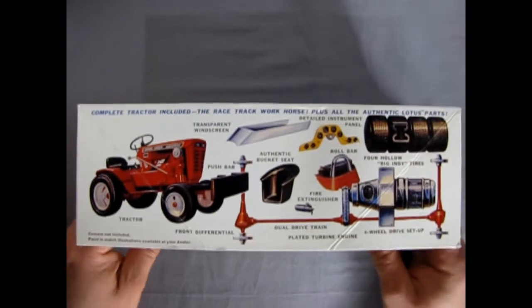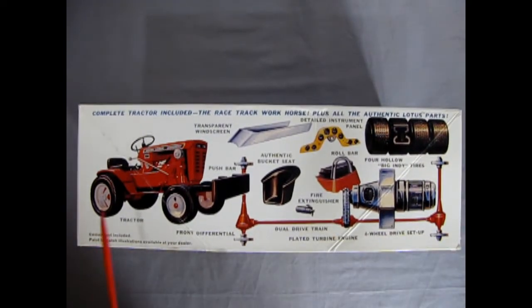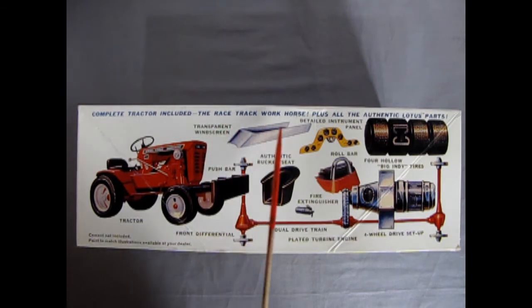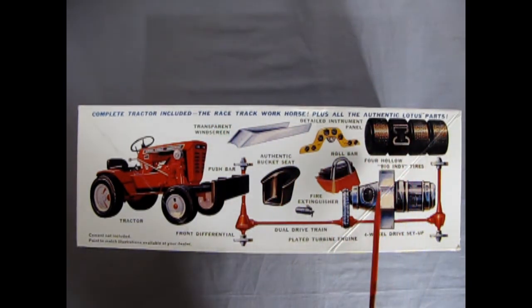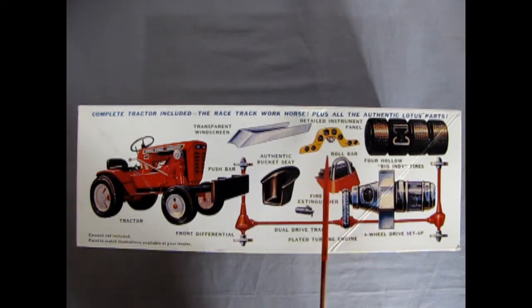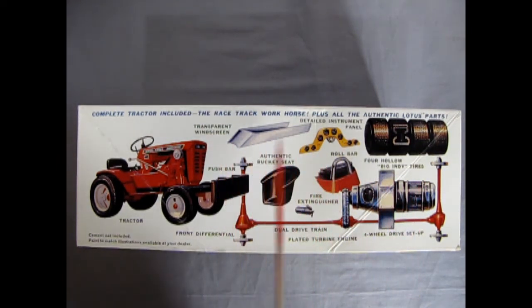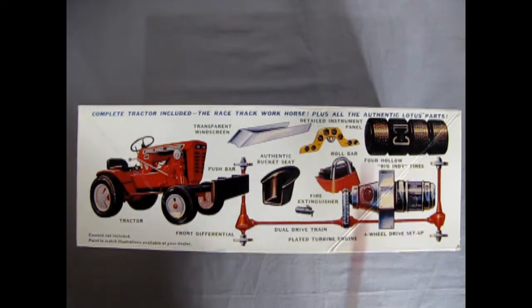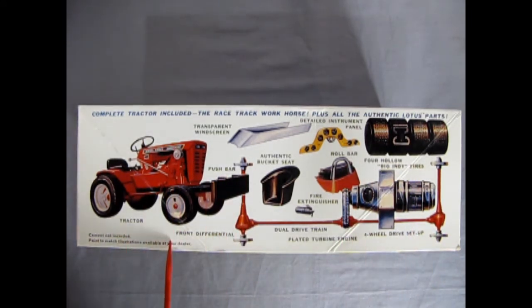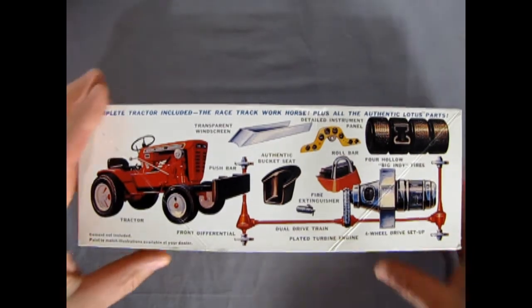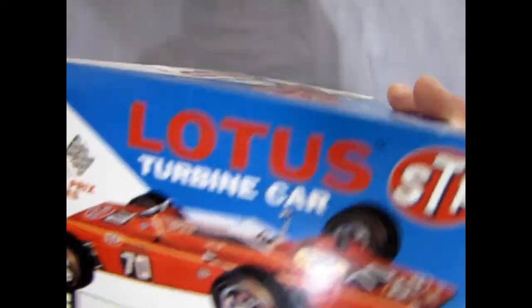And then here we get our amazing features of a complete tractor, which is included. The racetrack workhorse. Plus all the authentic Lotus parts. Four hollow big Indy tires. The detailed instrument panel. Transparent windscreen. Authentic bucket seat. Fire extinguisher. Dual drivetrain. Plated turbine engine. Four-wheel drive setup. And then the tractor that has the push bar. Cement not included. Paint to match illustration available at your dealer. The model kit dealer, of course.